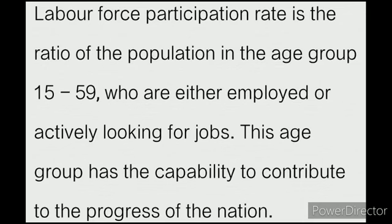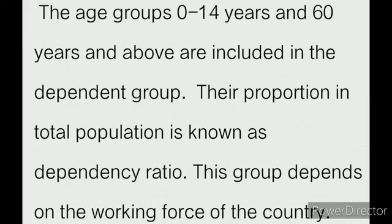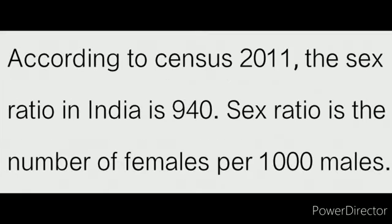Participation rate is the ratio of the population in the age group of 15 to 59 who are either employed or actively looking for jobs. This age group has the capacity to contribute to the progress of the nation. Dependency ratio is the proportion of the age groups 0 to 14 and 60 years and above in the total population — this group depends on the working force. According to census 2011, the sex ratio in India is 940, meaning 940 females per 1000 males.